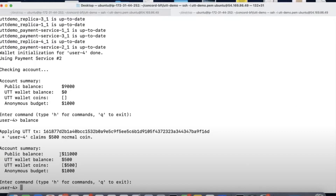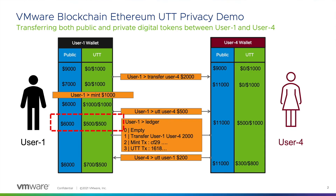Correspondingly, in User 1's wallet, there is a decrease of 500 in private tokens as well as a decrease of 500 in privacy budget.